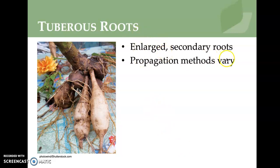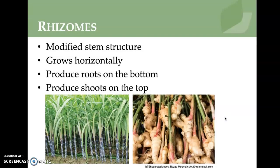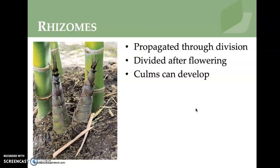Tuberous roots are enlarged secondary roots — dahlias are shown as an example. Rhizomes, illustrated with sugarcane and ginger, are modified stem structures that grow horizontally, producing roots on the bottom and shoots on the top. They're propagated through division, divided after flowering, and corms can also develop from them.